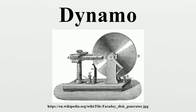The electric dynamo uses rotating coils of wire and magnetic fields to convert mechanical rotation into a pulsing direct electric current through Faraday's law of induction. A dynamo machine consists of a stationary structure called the stator, which provides a constant magnetic field, and a set of rotating windings called the armature, which turn within that field. The motion of the wire within the magnetic field causes the field to push on the electrons in the metal, creating an electric current. On small machines, the constant magnetic field may be provided by permanent magnets; larger machines use electromagnets called field coils.